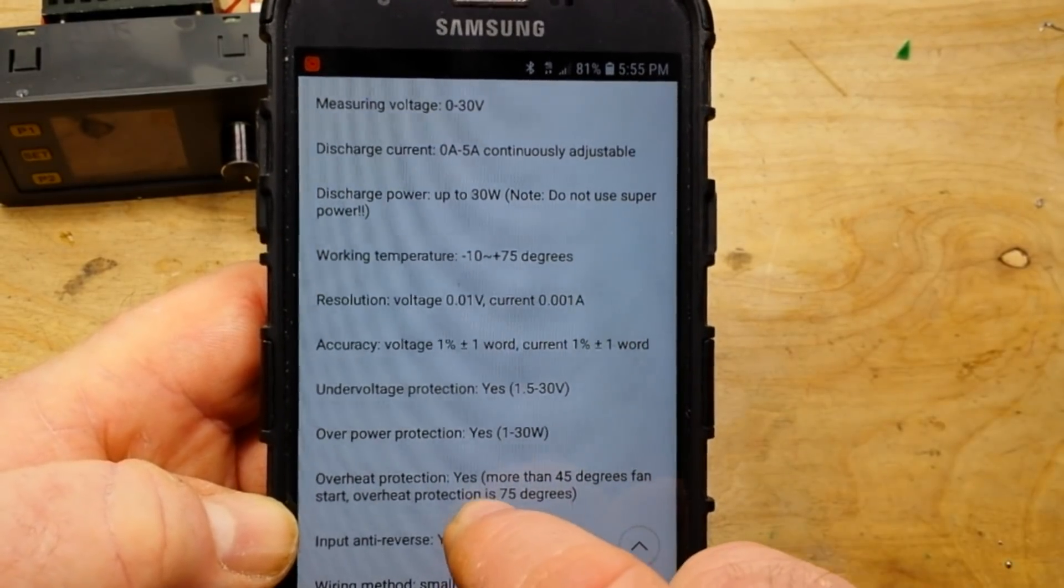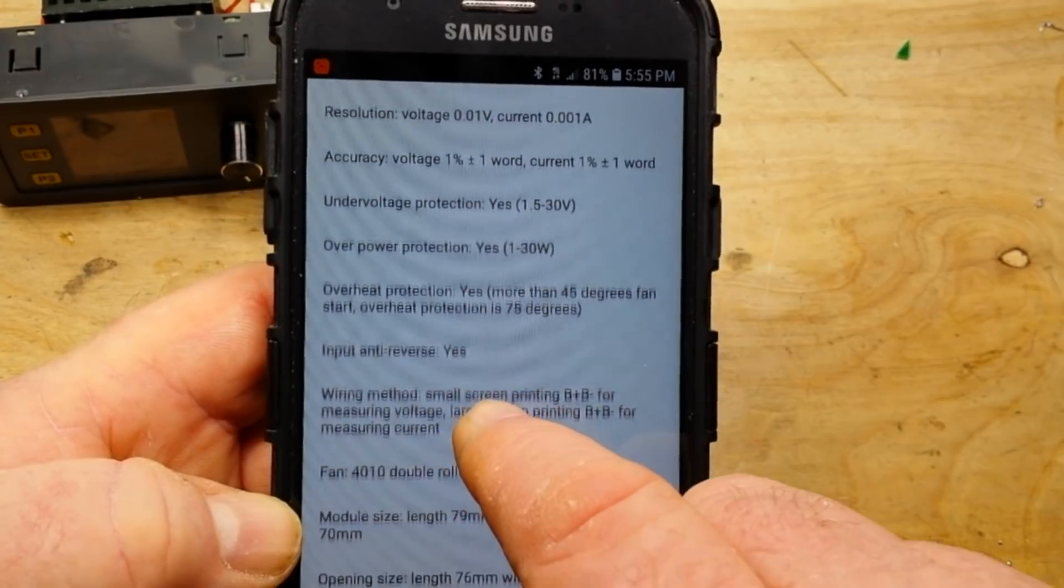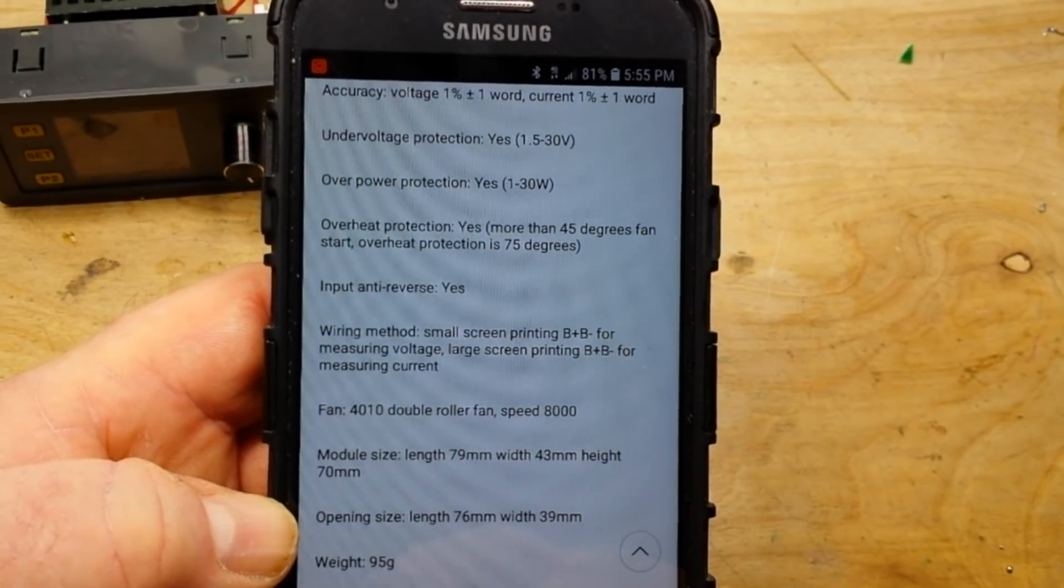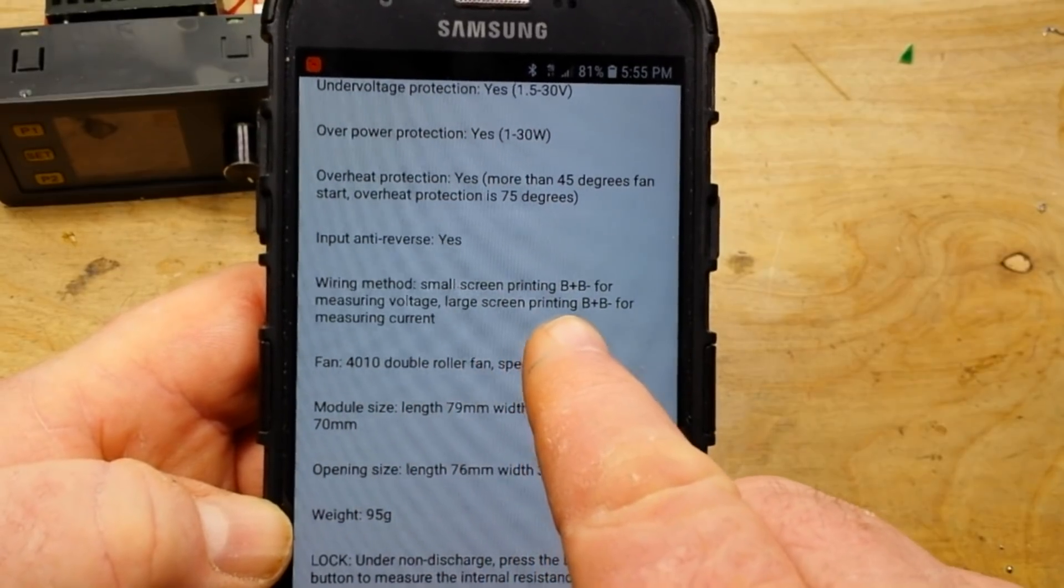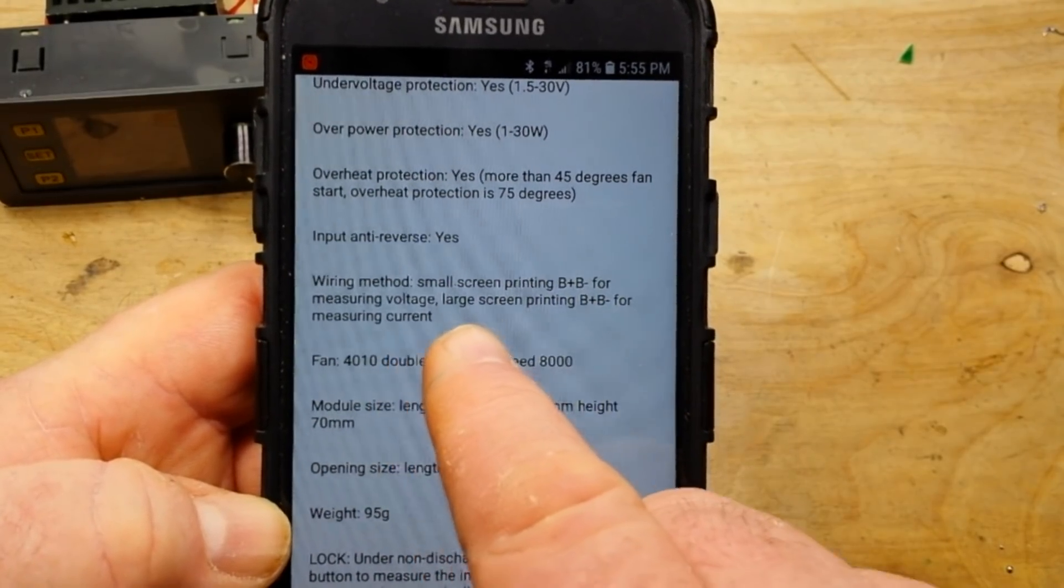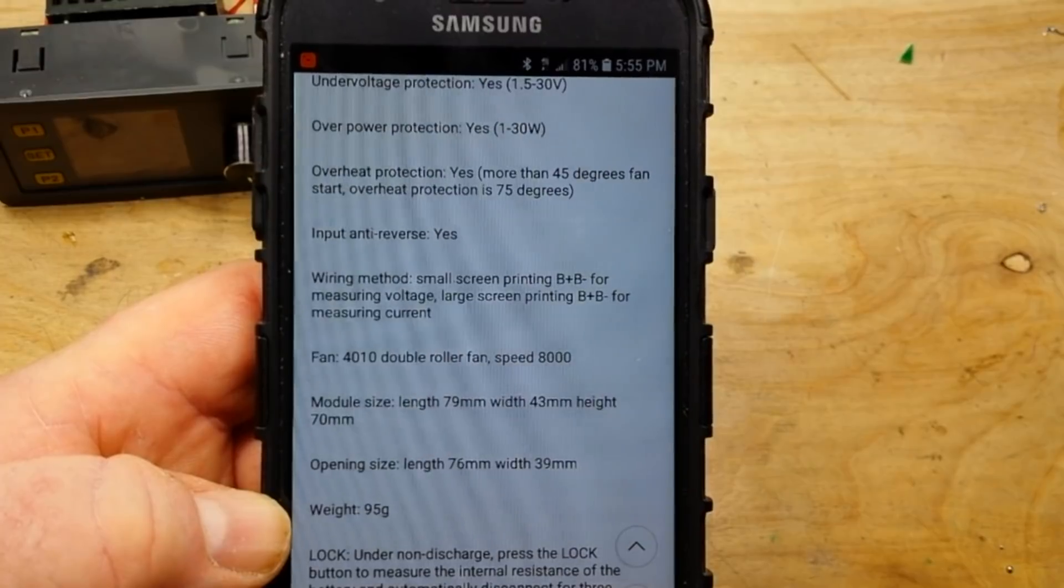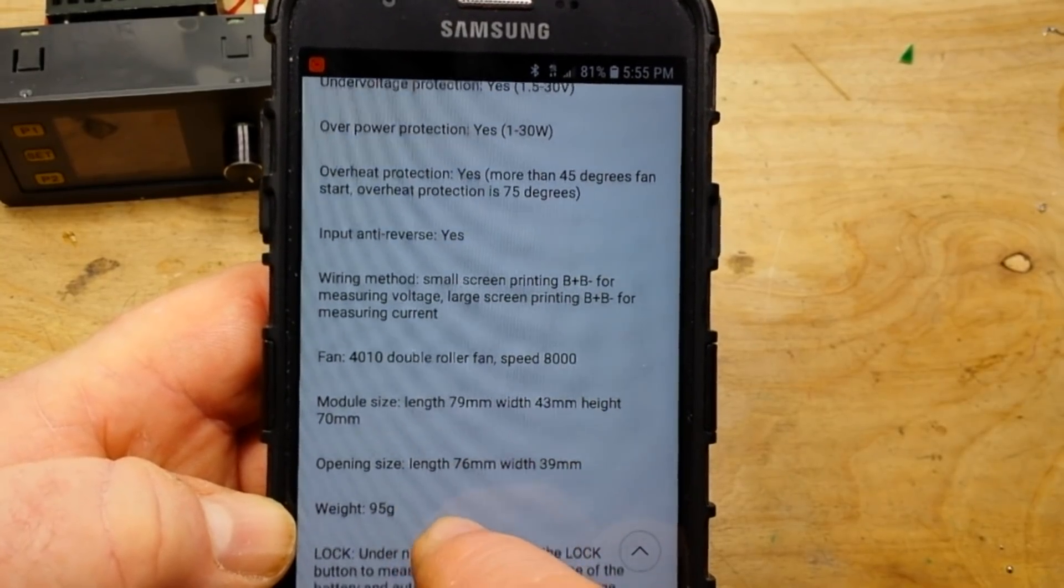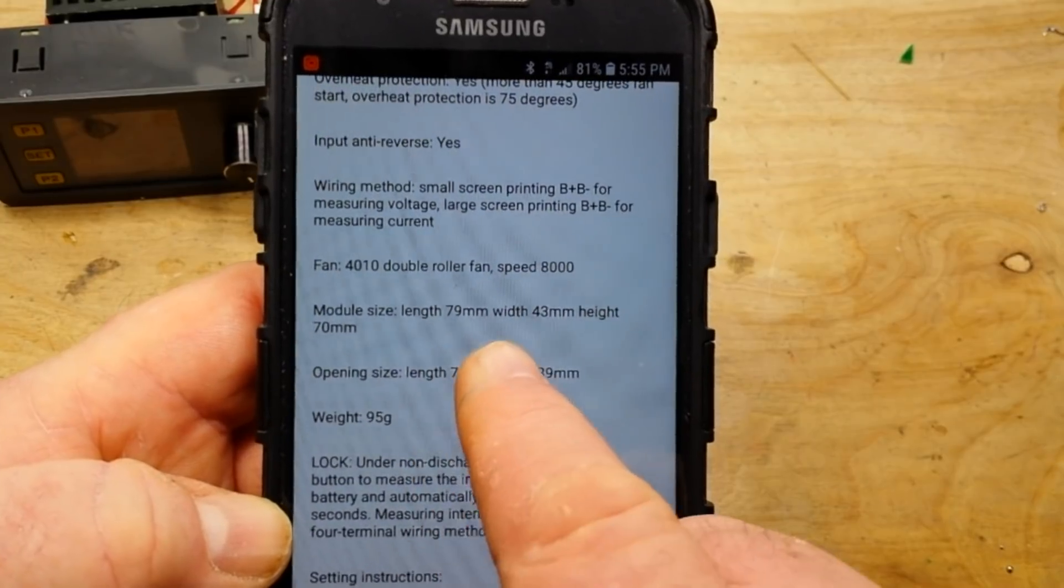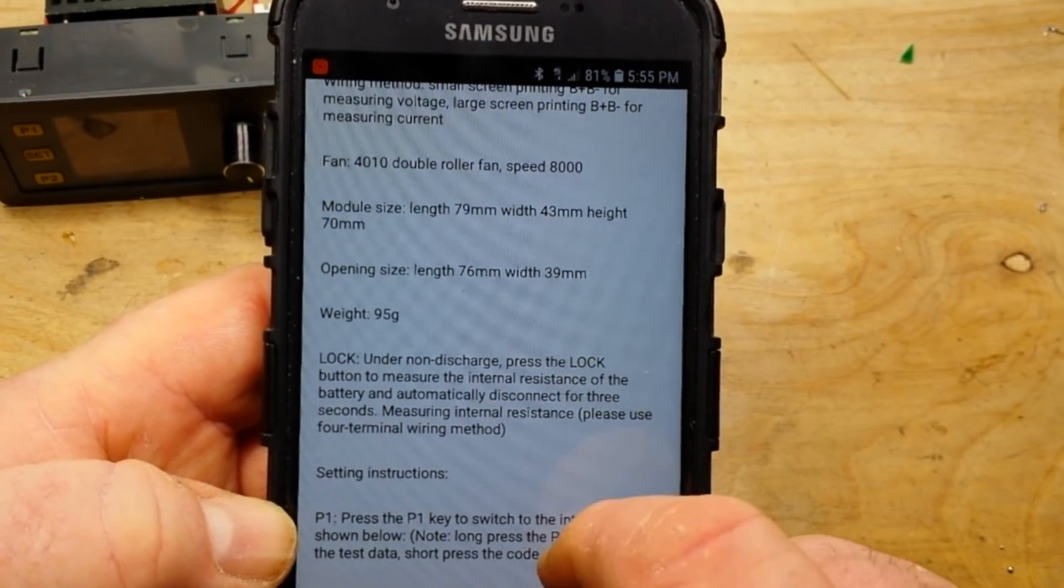Under voltage, over voltage, overheat, anti-reverse. Wiring method, which is a little odd. Small screen printing B plus B minus for measuring voltage. Large screen printing B plus B minus for measuring current. Has a double roller fan at 8,000 RPMs and there's the size, length, and the weight.